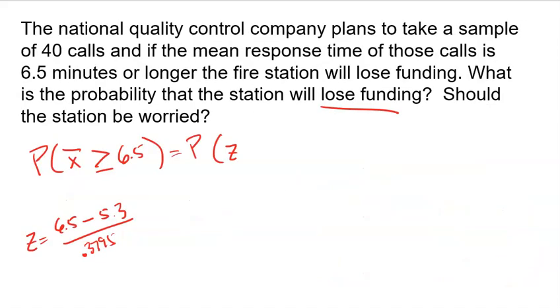If the question said, what's the probability one phone call comes back more than 6.5 minutes, then I would use 2.4. But the question is asking about a sample of 40 phone calls. That's why I'm using the standard deviation for the sampling distribution that represents what samples of 40 would look like.